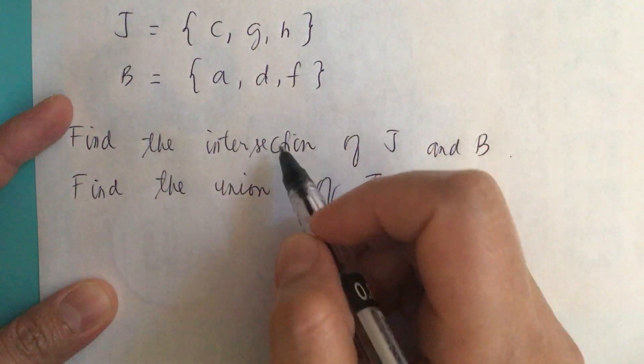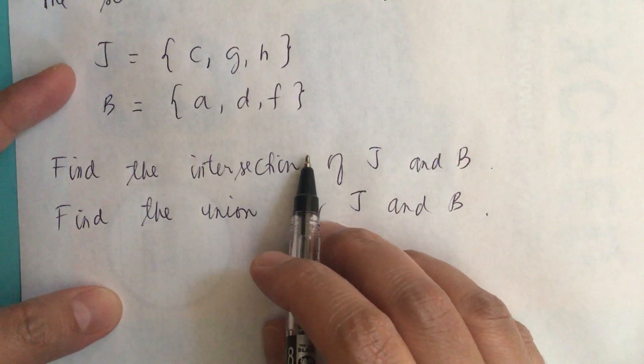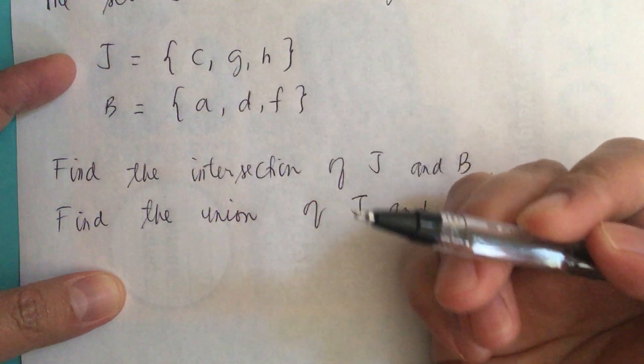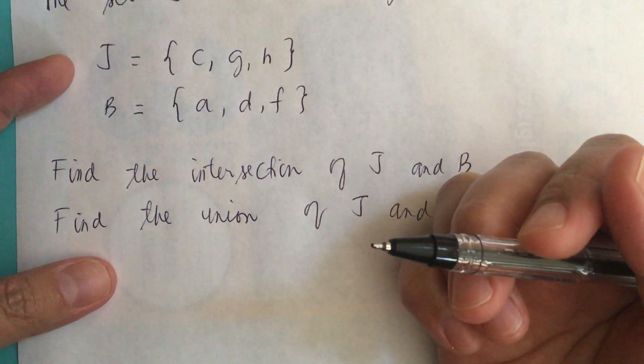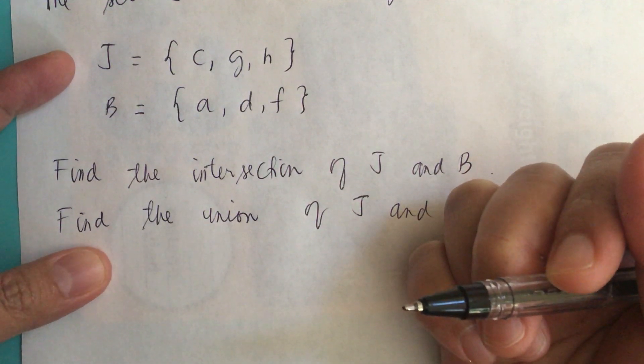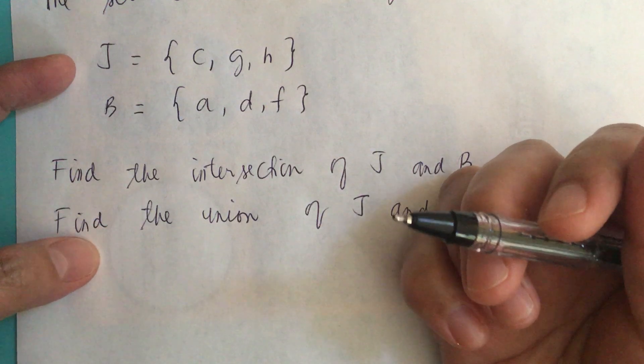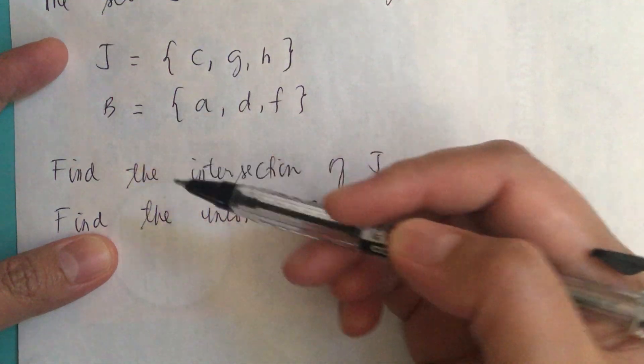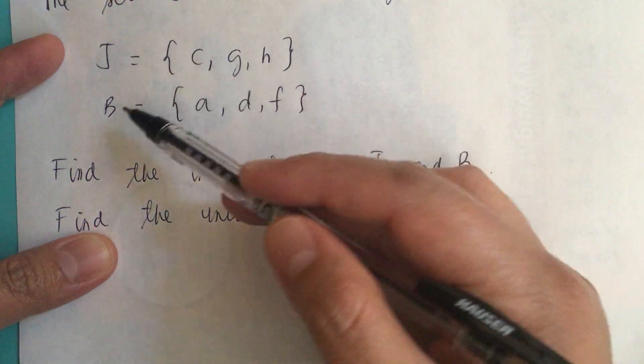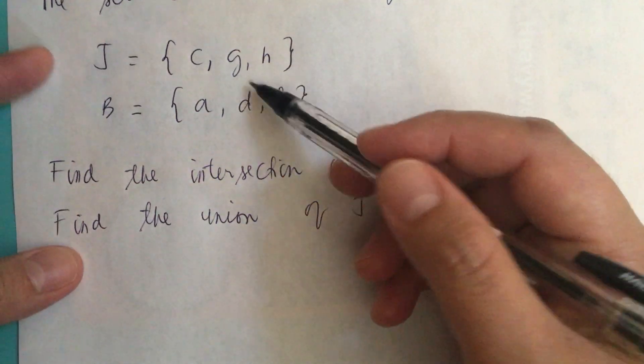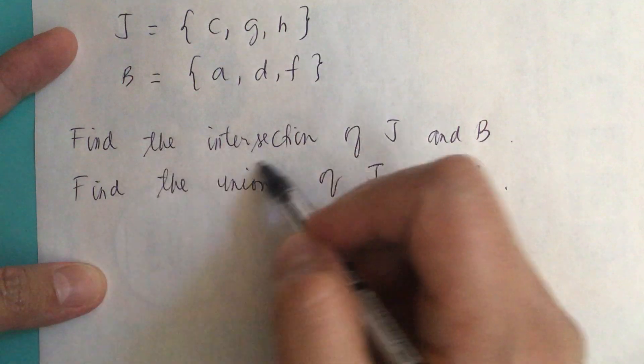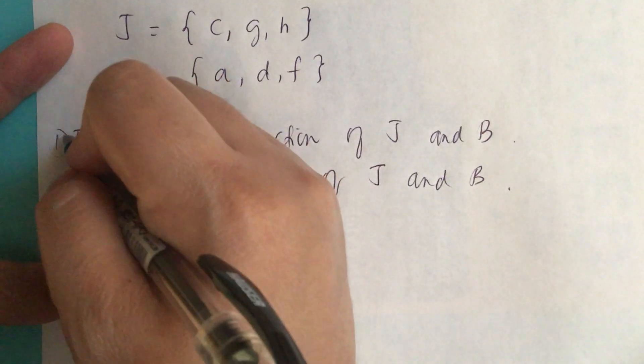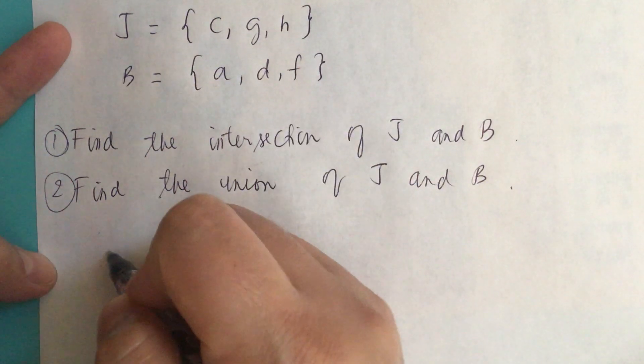First we find the intersection. Given the two sets J and B, the intersection is the set that contains elements or objects that belong to J and to B at the same time. Basically, we find J intersection B by looking for all the elements J and B have in common. This is number one. So for number one solution.